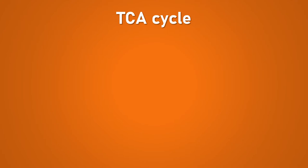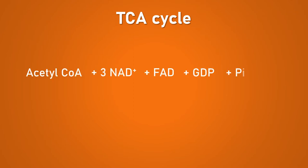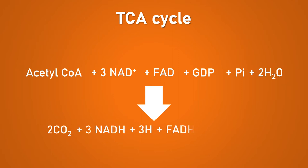The acetyl-coenzyme A, which is formed in the second stage of cellular respiration, takes part in the tricarboxylic acid cycle, also called the citric acid cycle or Krebs cycle. The acetyl-coenzyme A is condensed with oxaloacetate and through a series of metabolic reactions gets converted to carbon dioxide. The oxidation of acetyl-coenzyme A takes place in the mitochondrial matrix, with formation of four reducing equivalents along with one GTP molecule. Note that it is not a closed loop cycle, as no intermediate is directly utilized inside the cycle, and the oxaloacetate is re-synthesized within the cycle.